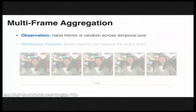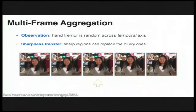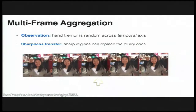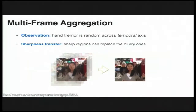Similar to other video de-blurring methods, our approach exploits the fact that camera shake caused by hand tremor is essentially random across the temporal axis, which leads to differently blurred content and the potential existence of sharper regions. By detecting and aggregating sharp information from nearby frames, the central reference image in the stack can be restored.